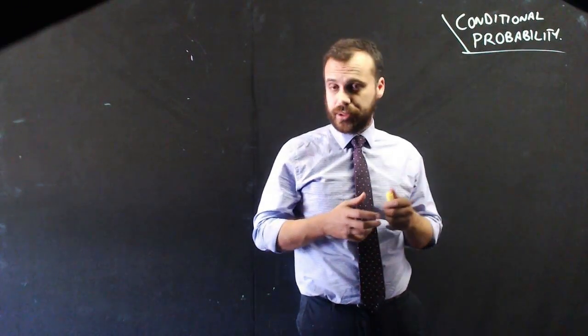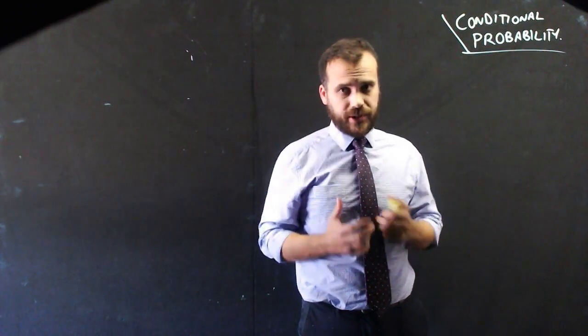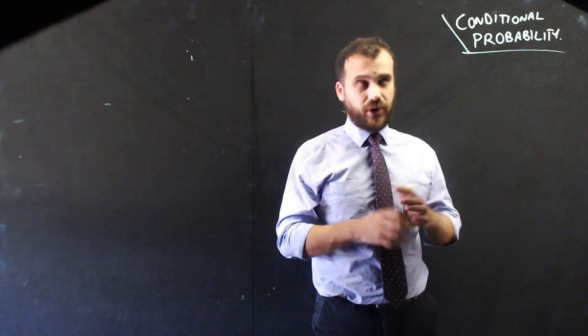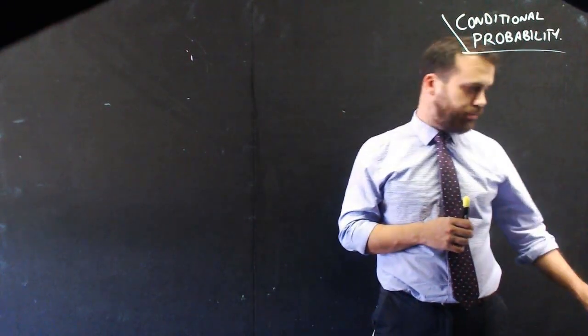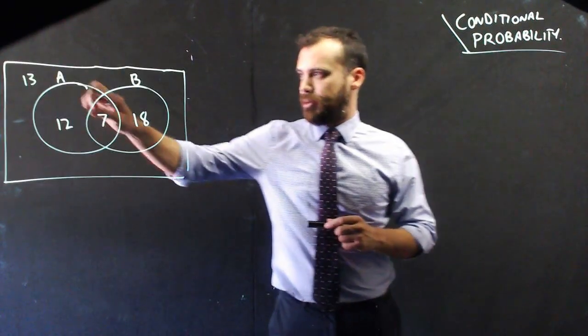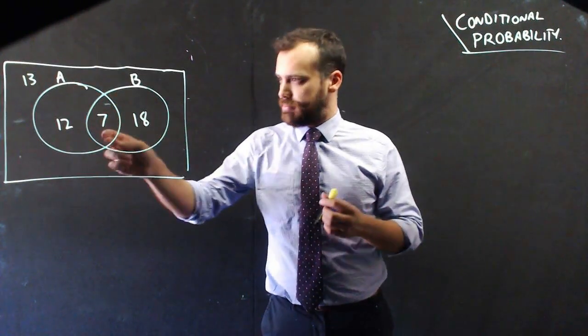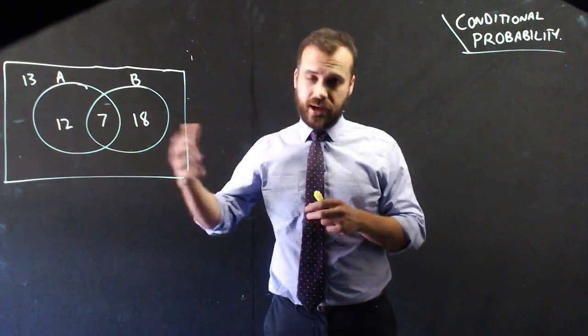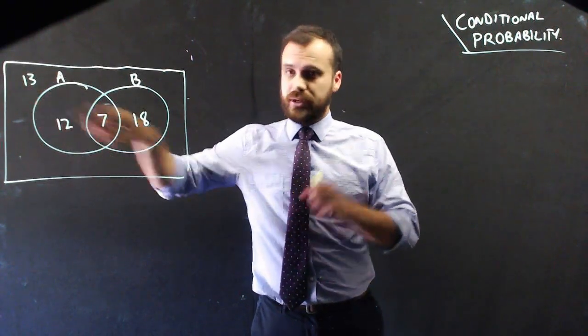We're going to talk about conditional probability here, and we probably need to talk about a Venn diagram first. So here's my Venn diagram: set A, set B, some people that are both in set A and set B, and some people that are in neither.